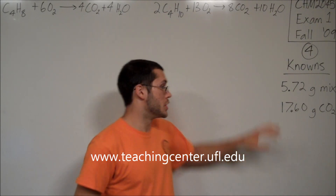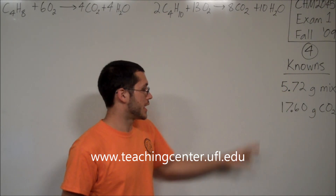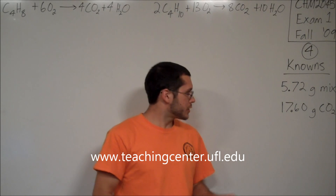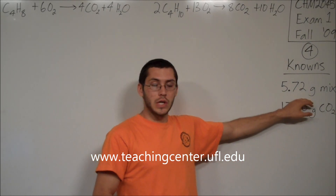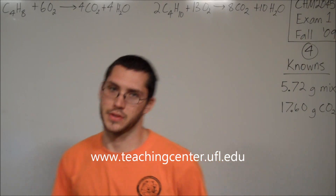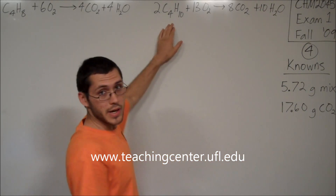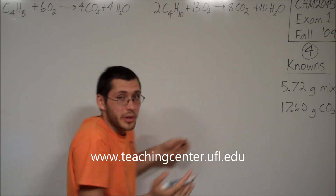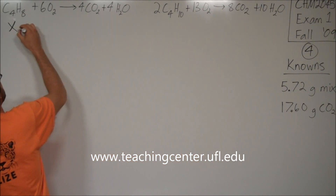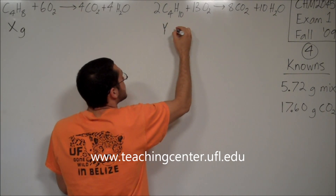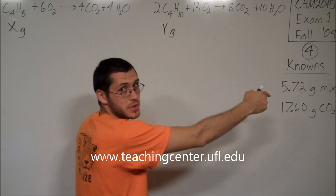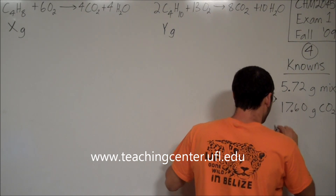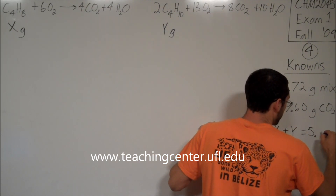The first thing I've done is written down all my knowns in a column to get rid of excess text. The second thing is I've written out the two reactions given. They give me the total mass of the mixture — butene and butane. I'll say x grams of butene and y grams of butane. Whatever they are, they must add up to give 5.72 grams, so x plus y equals 5.72.